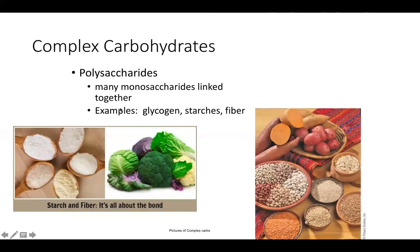Complex carbohydrates include the polysaccharides, meaning many monosaccharides linked together. These include glycogen, which is the human and animal storage form of glucose; starches, which are plant storage forms of glucose; and fiber, which is generally indigestible to humans. Complex carbohydrates tend to be whole foods as well as different starches.